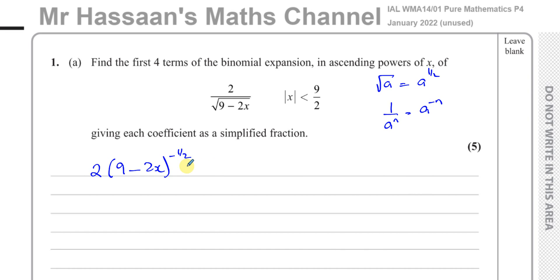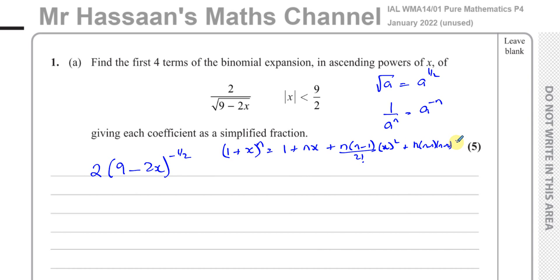We have to use the formula, which is (1 + x)^n = 1 + nx + n(n-1)/2! × x² + n(n-1)(n-2)/3! × x³. This formula is actually in the formula book. There has to be a 1 in the leading position for us to be able to expand. The x in the formula refers to whatever term is in that position, and the n refers to whatever power we have. But there must be a 1 here — if there's not a 1 there, then we cannot use this formula. So I have to make this have a 1.